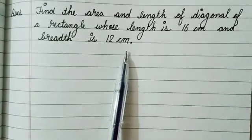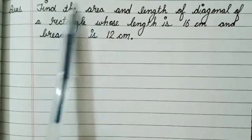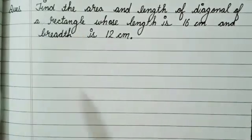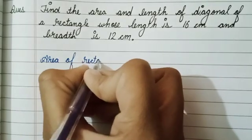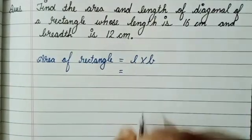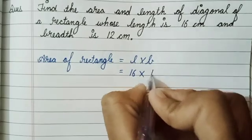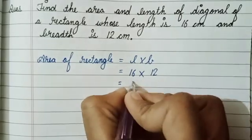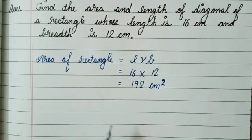First we have to find the area of the rectangle. We have the length and breadth, so with the help of a formula we can easily find the area. The area of a rectangle equals length into breadth. Putting in the values, length is 16 and breadth is 12 centimeters, so 16 into 12 gives us 192 centimeters squared. This is the area of the rectangle.